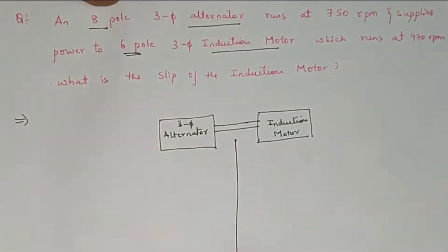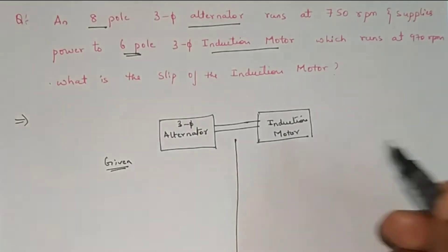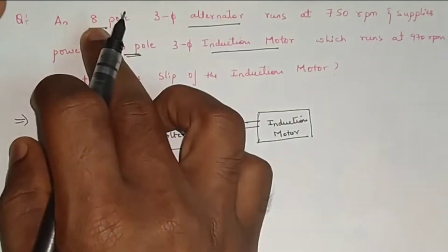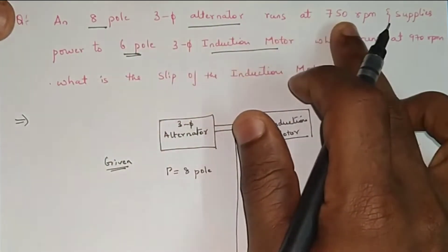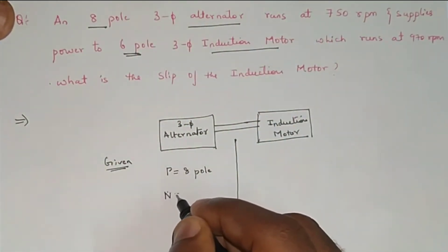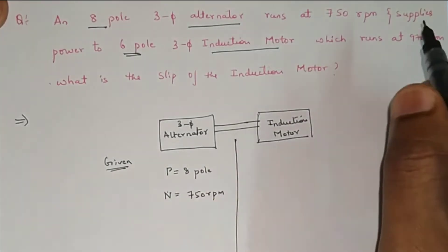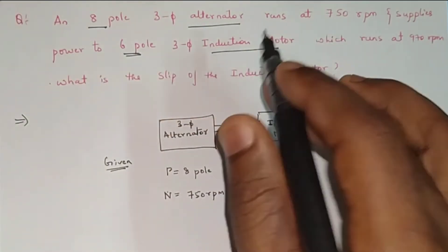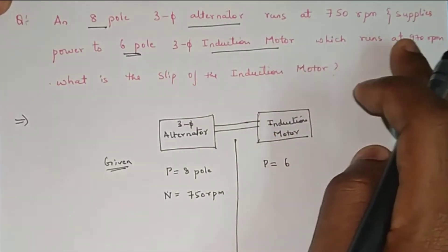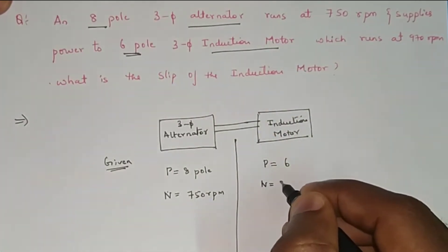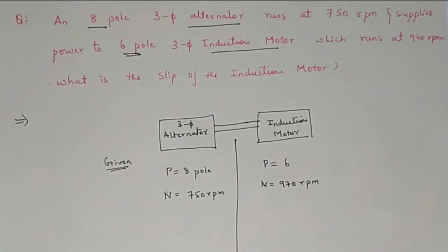To solve this problem in the simplest way, draw the two machines and make two columns, then write down the given data under the respective machines. For the three-phase alternator: poles = 8, speed = 750 rpm. For the three-phase induction motor: poles = 6, speed = 970 rpm.